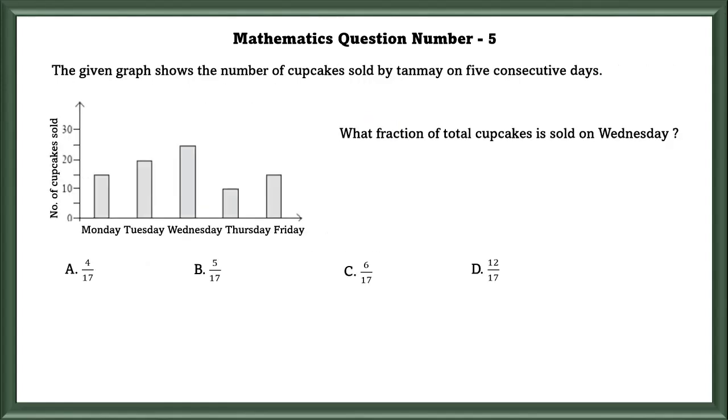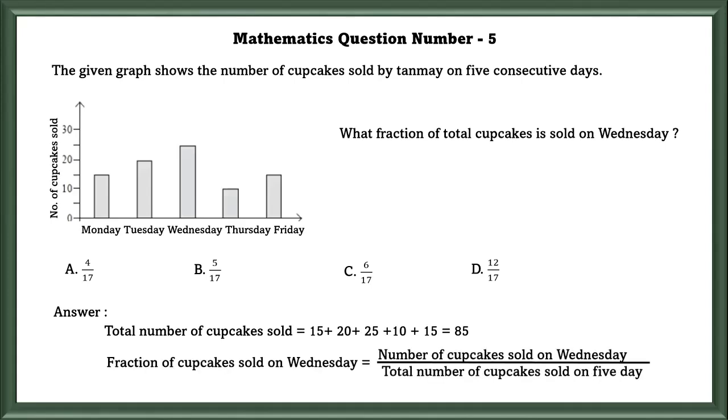Mathematics Question Number 5: The given graph shows number of cupcakes sold by Tamiya on 5 consecutive days. What fraction of total cupcakes is sold on Wednesday? In order to find how many cupcakes were sold on all 5 days, we have to add each day. If we do that, we will get 85 cupcakes sold in 5 days. So fraction of cupcakes sold on Wednesday is equal to number of cupcakes sold on Wednesday by total number of cupcakes sold on 5 days, which is equal to 25/85, equal in fraction to 5/17, that is B.